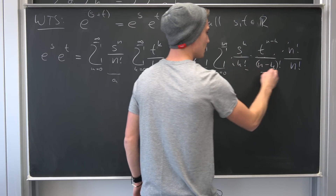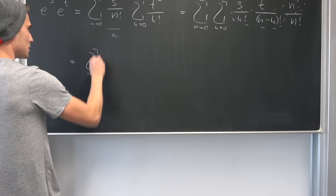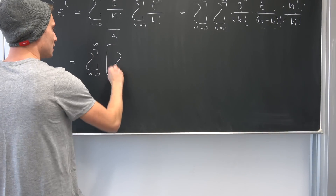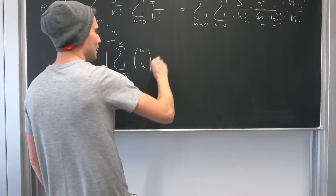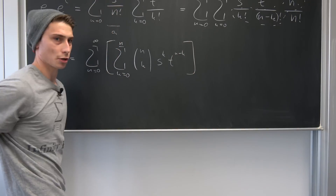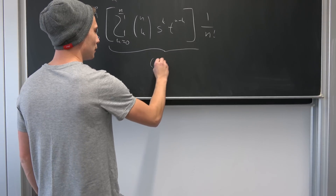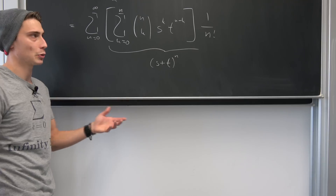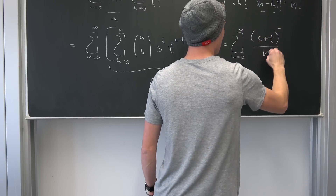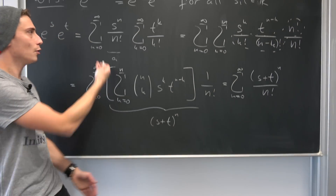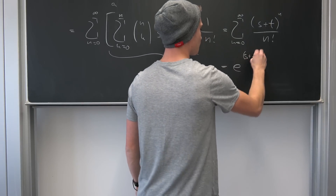This looks really similar to what we have. To get the n-choose-k factor, we multiply through by n factorial over n factorial. This part becomes n-choose-k, and writing everything out we get the sum from n equals 0 to infinity of big brackets — sum from k equals 0 to n of n-choose-k times s to the kth power times t to the n minus kth power — closing the brackets, times 1 over n factorial. By the binomial theorem the inner sum is exactly s plus t to the nth power. So this is nothing but the infinite sum from n equals 0 to infinity of s plus t to the nth power over n factorial, which is just the definition of e to the s plus t. And then we are done.